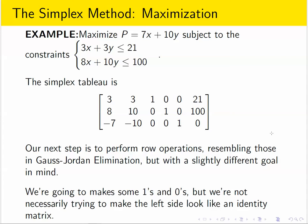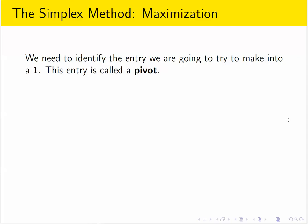We're going to make it look a little bit different, one column at a time. So what we have to do is figure out where we're going to make a one, and that entry is called a pivot.